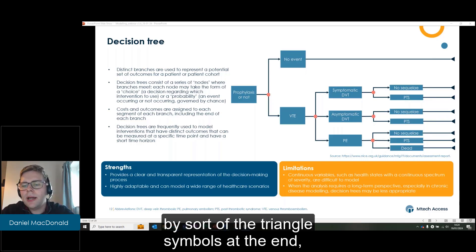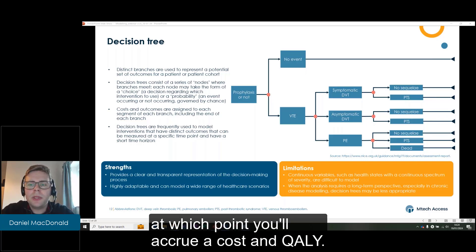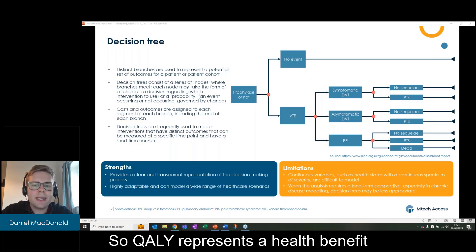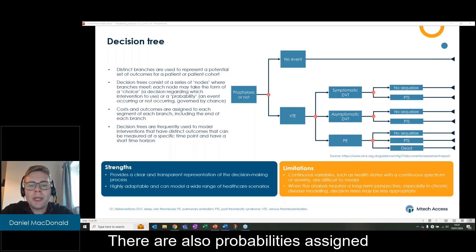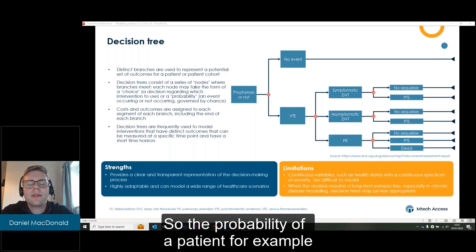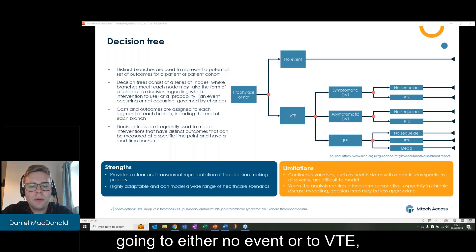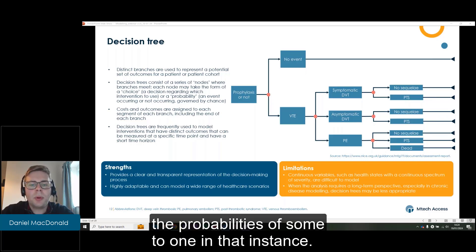So these will be denoted by the triangle symbols at the end, at which point you'll accrue a cost and QALY, so QALY representing the health benefit for that specific branch. There are also probabilities assigned to each specific branch, so the probability of a patient, for example, going to either no event or to VTE.